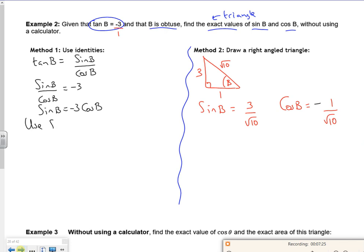So if I use sine squared B plus cos squared B is 1, sine B is minus 3 cos B, that's all squared, plus cos squared B is 1. That's going to give you 9 cos squared plus 1 lot of cos squared is 10 cos squared B. 10 cos squared B is 1, cos squared B is 1 over 10, cos B is plus or minus 1 over root 10.